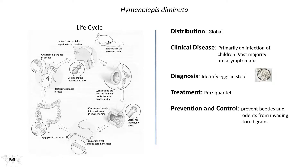Another species, Hymenolepis diminuta, also involves a complex life cycle — but in this case it requires a beetle as the insect intermediate host; there is no alternate life cycle. The cycle begins when humans accidentally ingest these beetles, or rodents purposefully ingest them as part of their food supply. The larval stage inside the beetle is then released into the small intestine, the scolex evaginates, attaches to the small intestinal wall, and proglottids are produced.